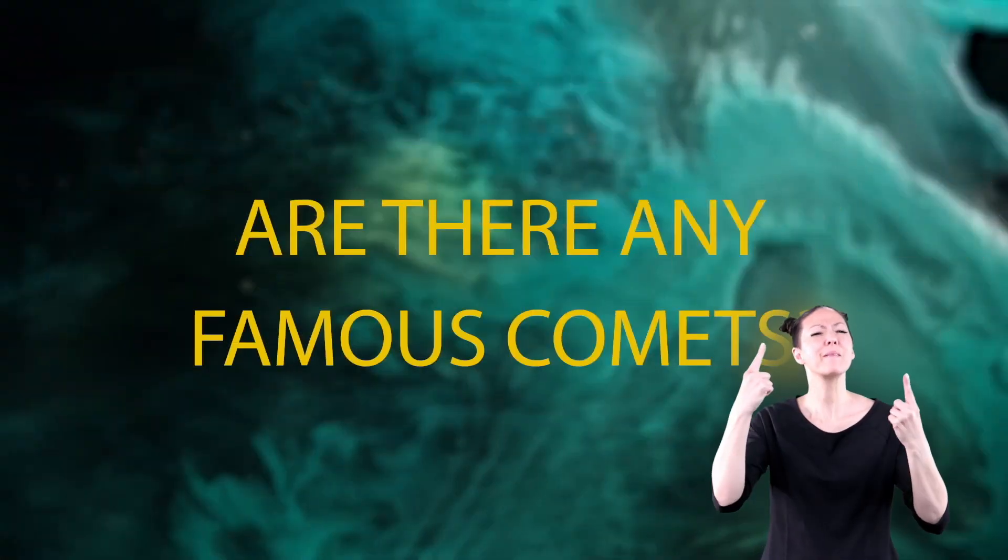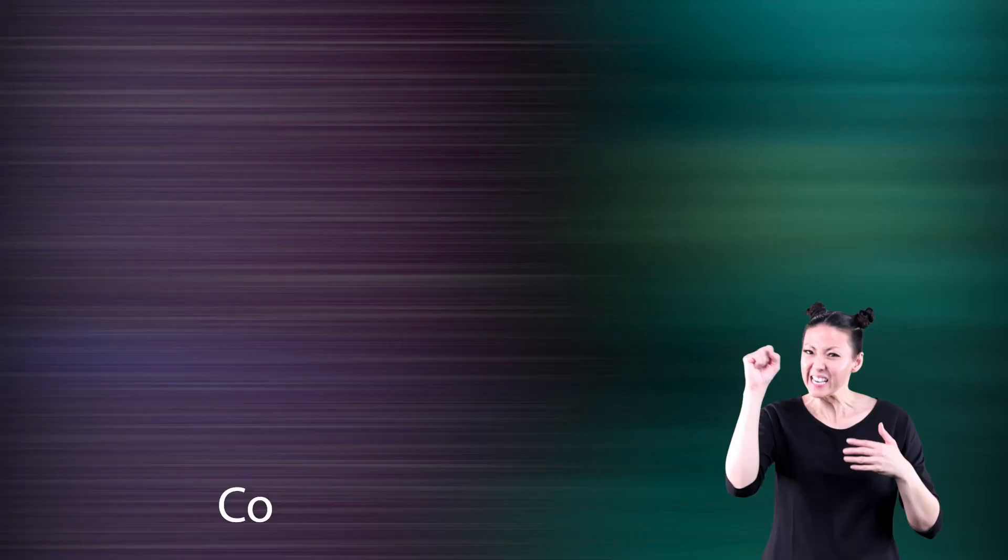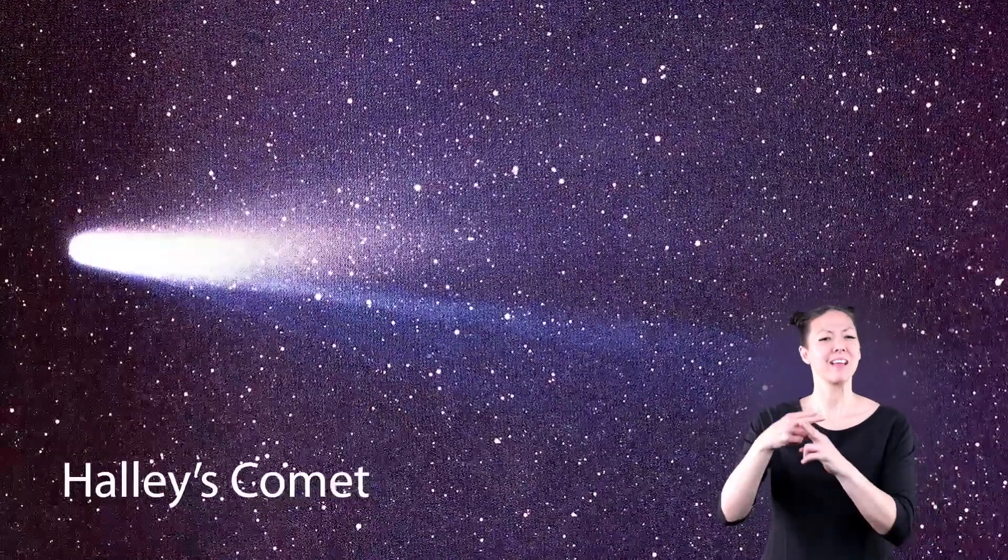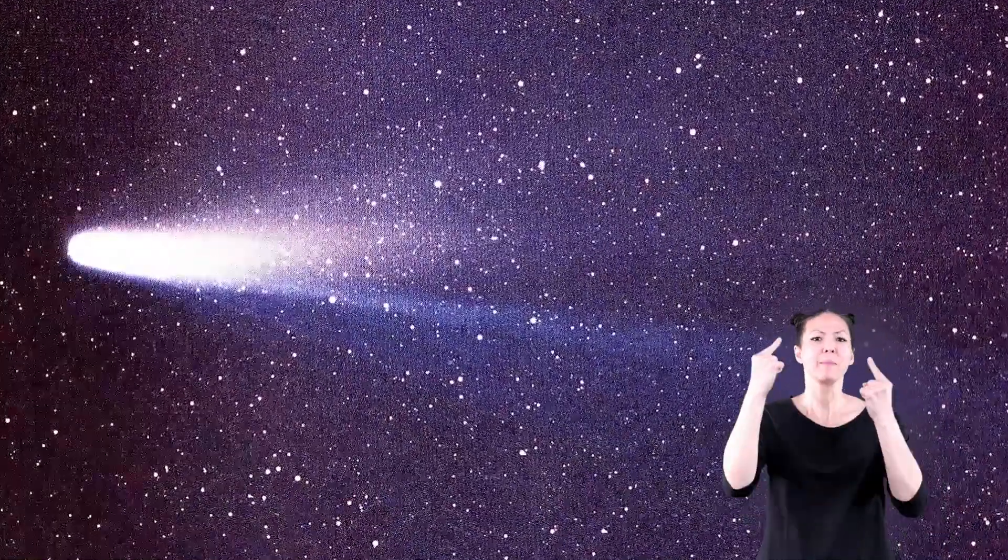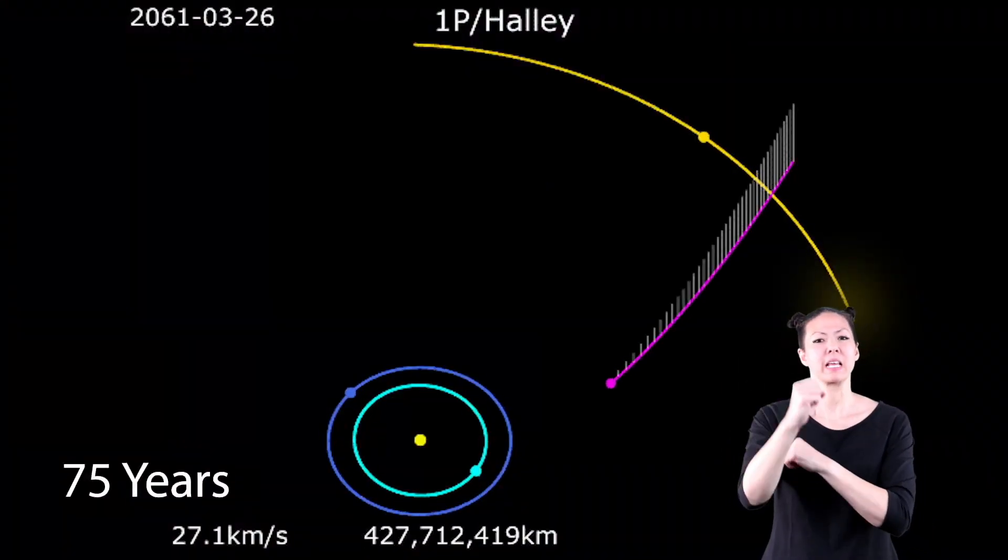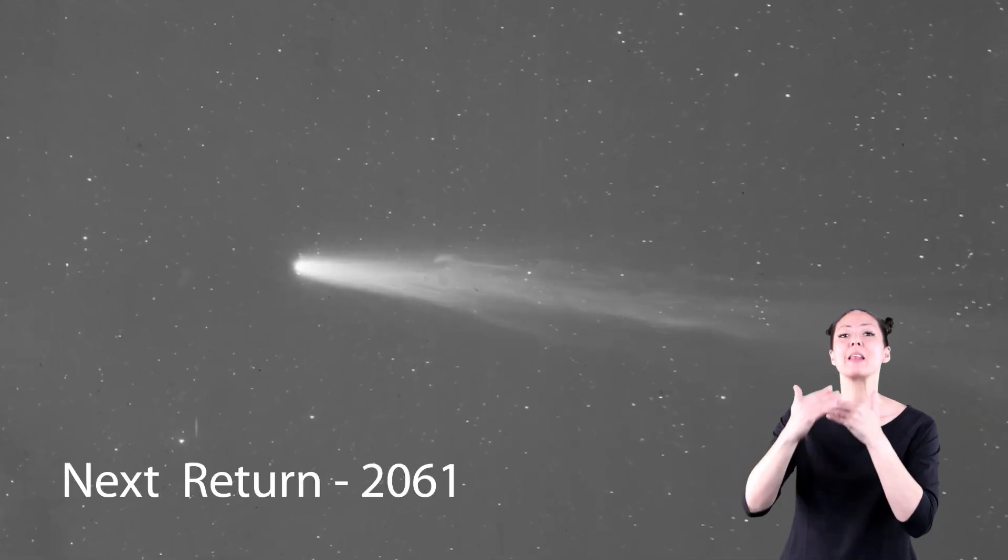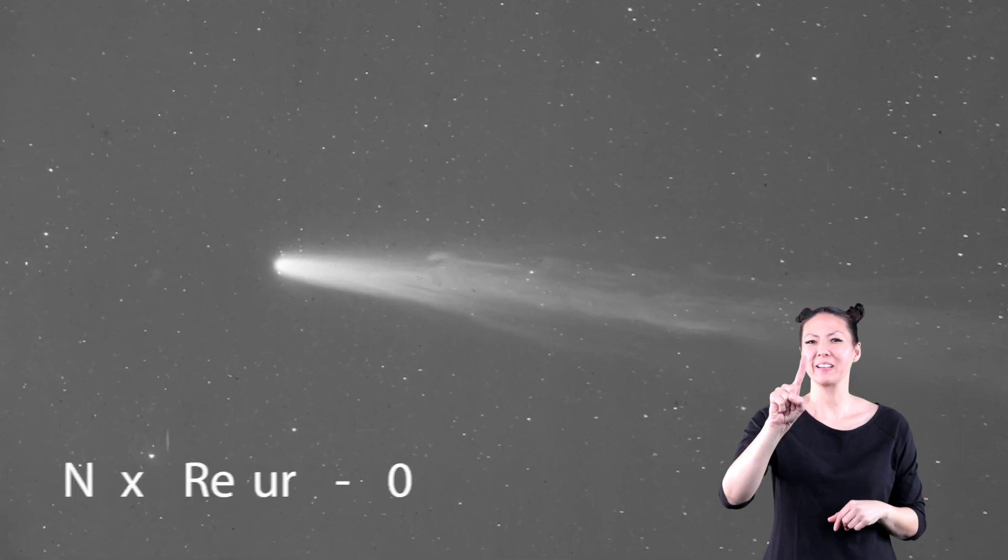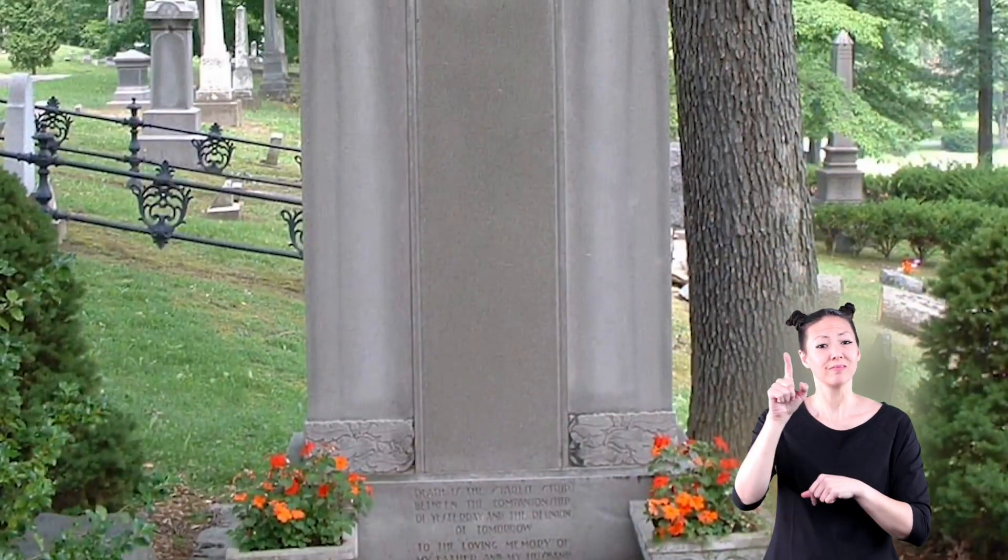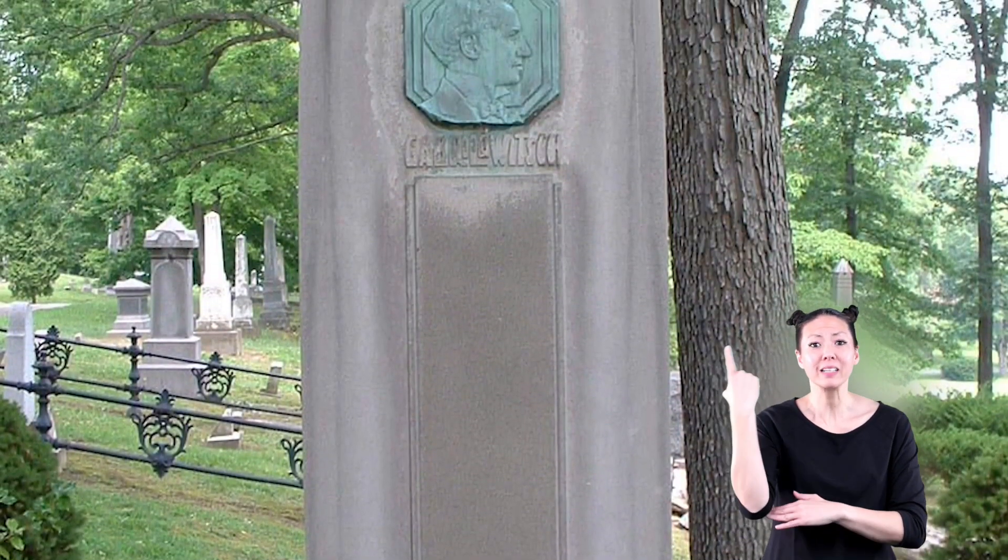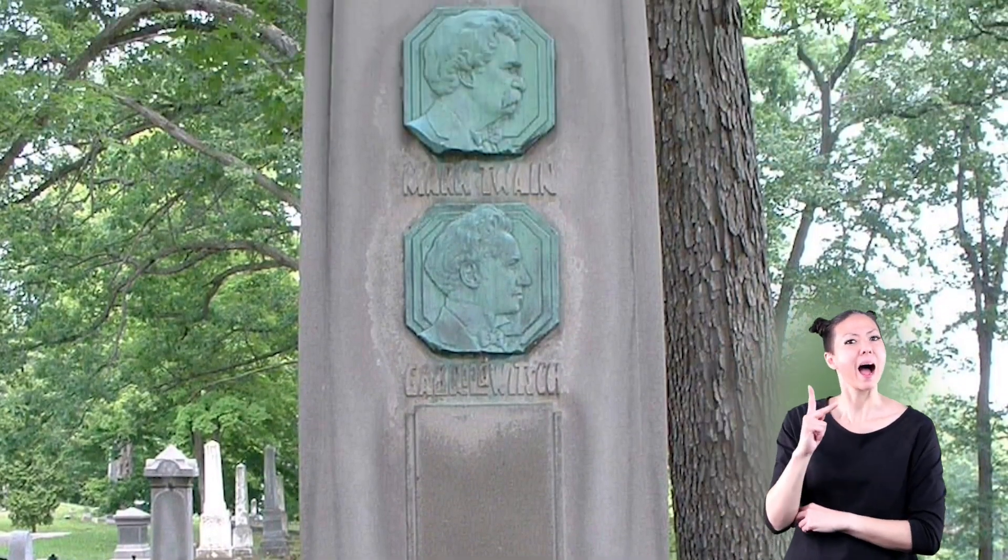Are there any famous comets? You betcha! Halley's Comet is one of the most famous comets. This comet is visible about once every 75 years. Scientists predict that it will next be visible in the year 2061. Famous writer Mark Twain once said that he was born on the day that Halley's Comet passed by and that he would die when it returned. Sure enough, he died 74 years later, just one day after Halley's Comet came back.